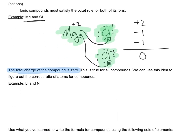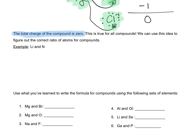Let's look at lithium and nitrogen as an example. Lithium has a charge of positive one, and nitrogen has a charge of negative three — you can pause and go look at the periodic table and see that this is true. So right now, if we just had one lithium with one nitrogen, the total charge is negative two, because positive one and negative three is negative two. So that's not balanced — it is not evened out to zero.